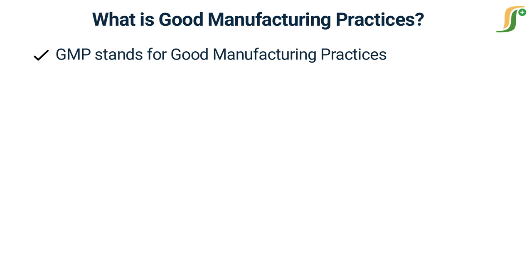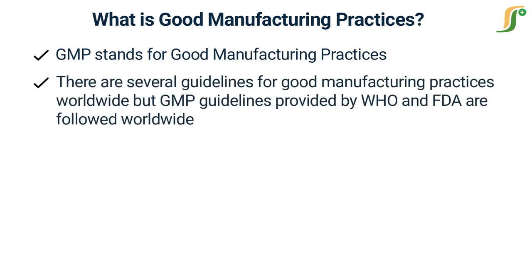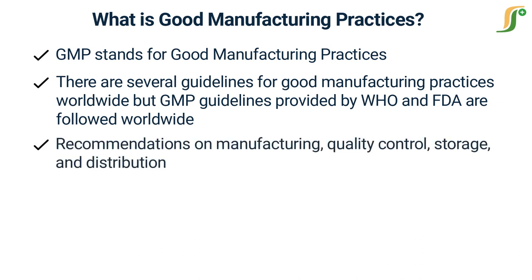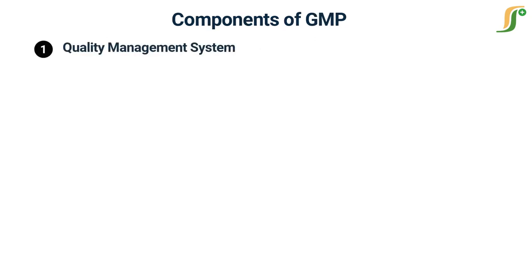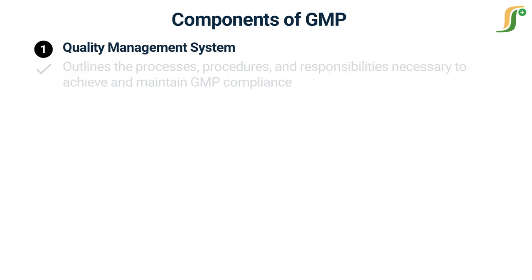There are several guidelines for Good Manufacturing Practices worldwide, but GMP guidelines provided by WHO and FDA are followed throughout the world. These guidelines have recommendations for almost all departments of pharmaceutical firms like manufacturing, quality control, storage, and distribution. Good Manufacturing Practices in pharmaceuticals has the following 14 components. The first component is Quality Management System.